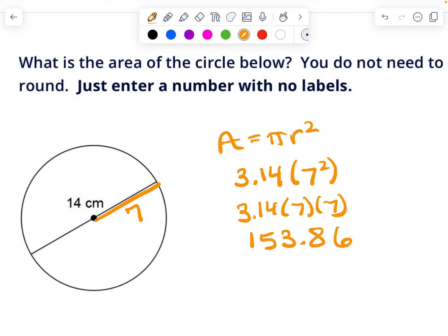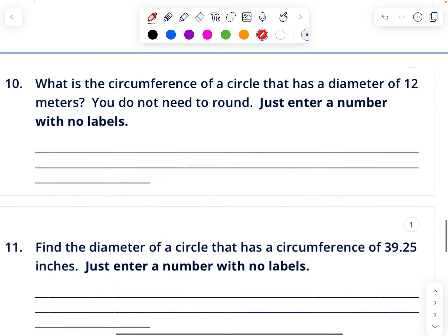What is the circumference of a circle that has a diameter of 12? Circumference is pi times diameter, so it's just 3.14 times 12, which is 37.68.